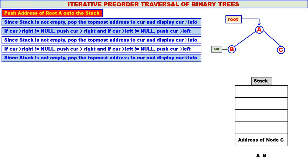Again, since the stack is not empty — it contains the address of node C — we pop the topmost address to curr. Curr will contain the address of node C. We display curr's info, so C is displayed. Very good.